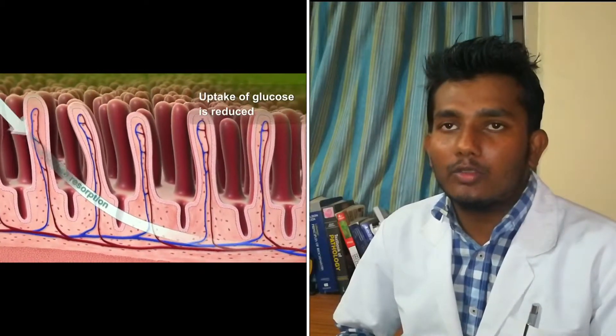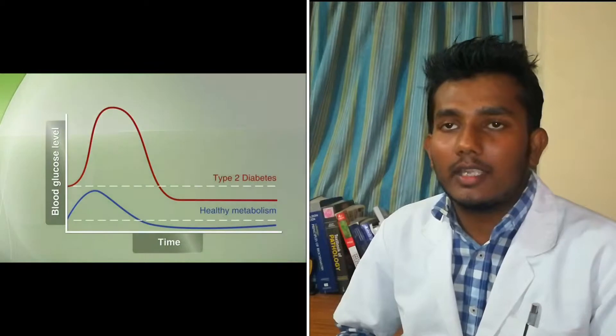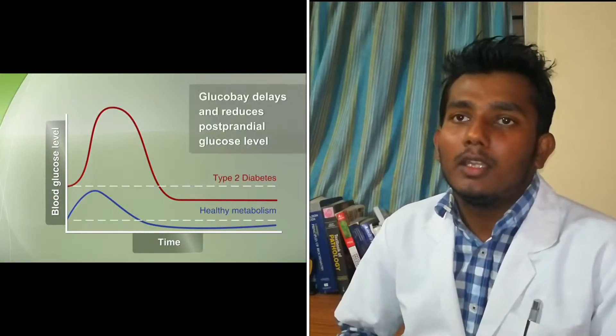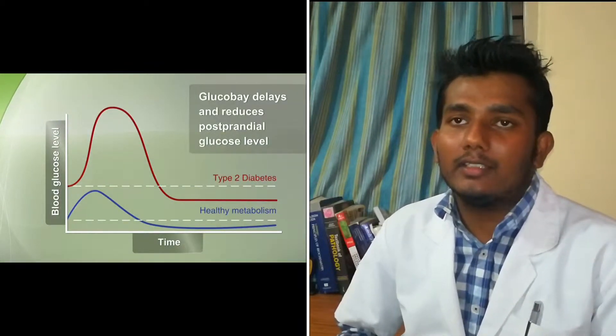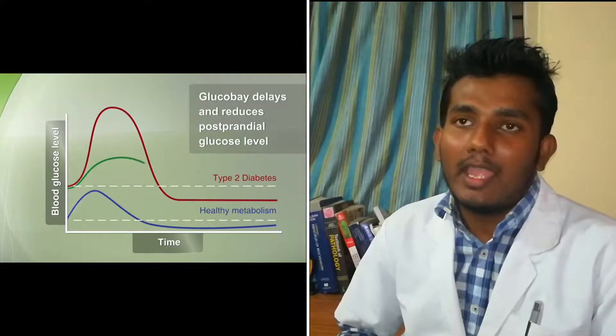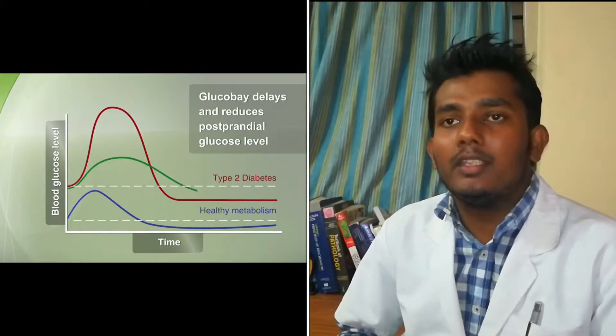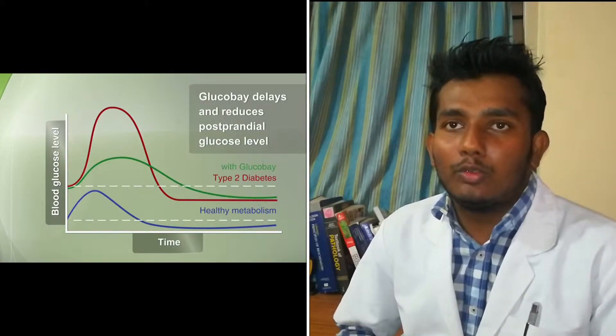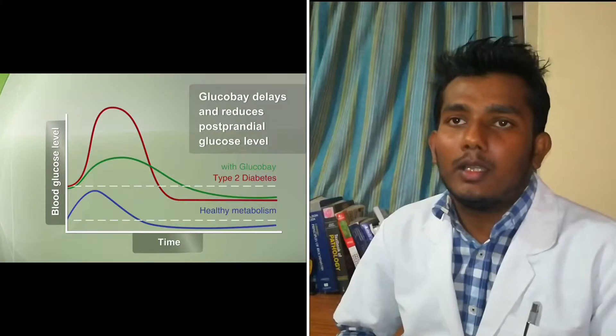In this way, alpha-glucosidase inhibitors like Acarbose delay the absorption of carbohydrates in the gastrointestinal tract and effectively reduce the postprandial plasma glucose levels. Let's see the benefits of it.